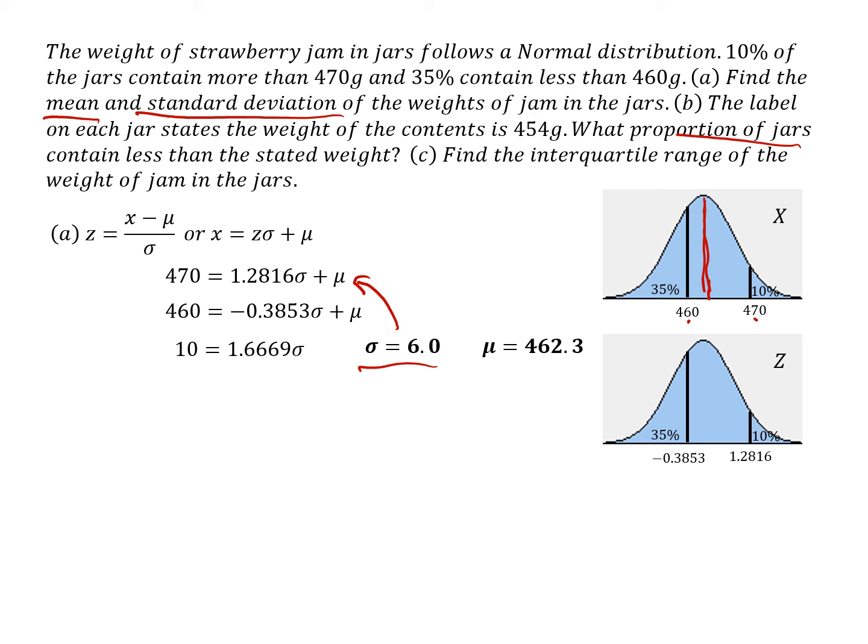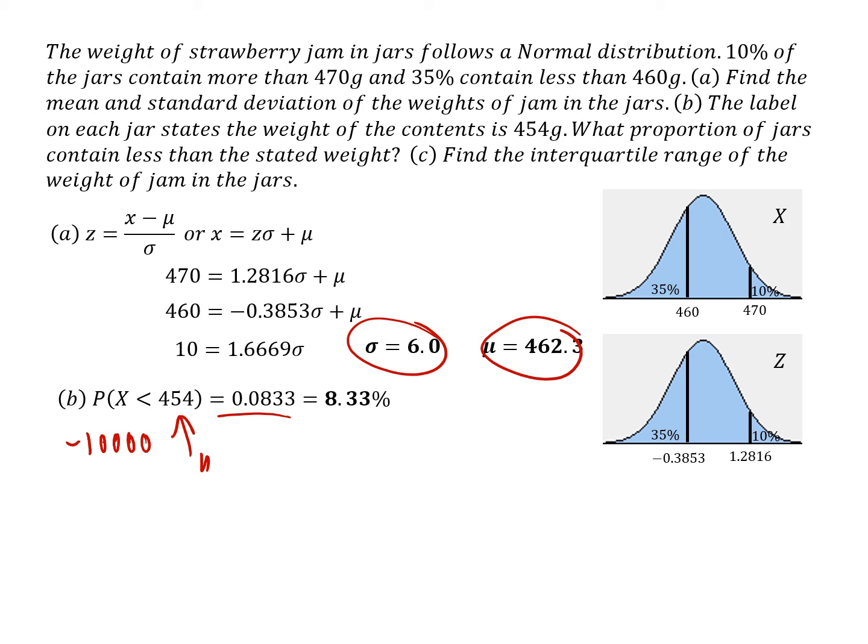Now we've got to find what proportion of jars contain less than the stated weight. And the stated weight is 454 grams. So using the calculator with a lower figure of minus 10,000, or you could just put zero probably would be exactly the same answer. This would be the upper figure. And now we've got the mean and the standard deviation. So we can put those in. And the calculator should give us a figure of 0.0833. But remember that the question's asking what proportion of jars? And we often express proportions in percentage terms, so 8.33%, but probably either of those two answers would give you all the marks in the exam.